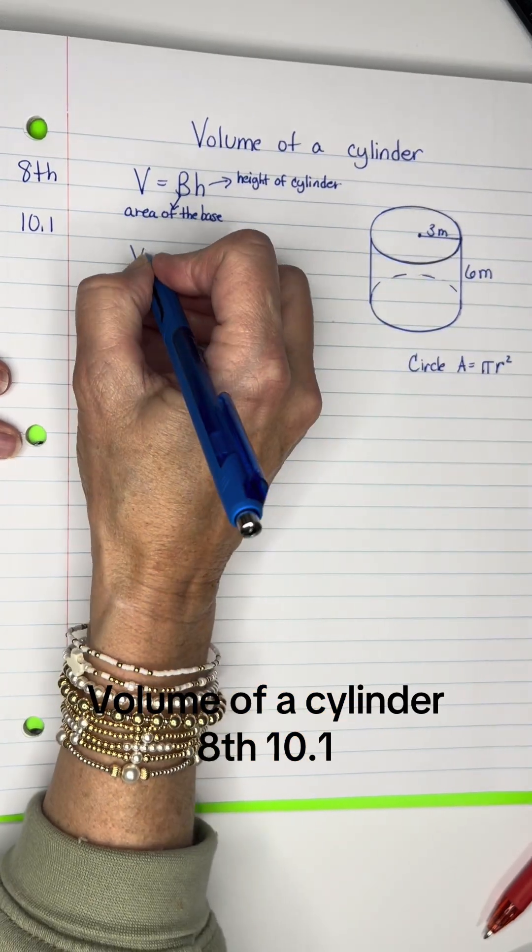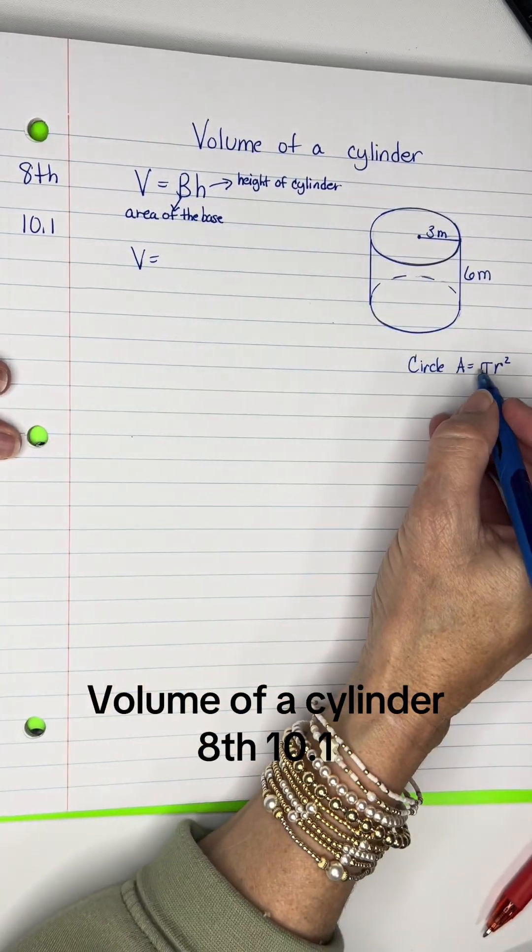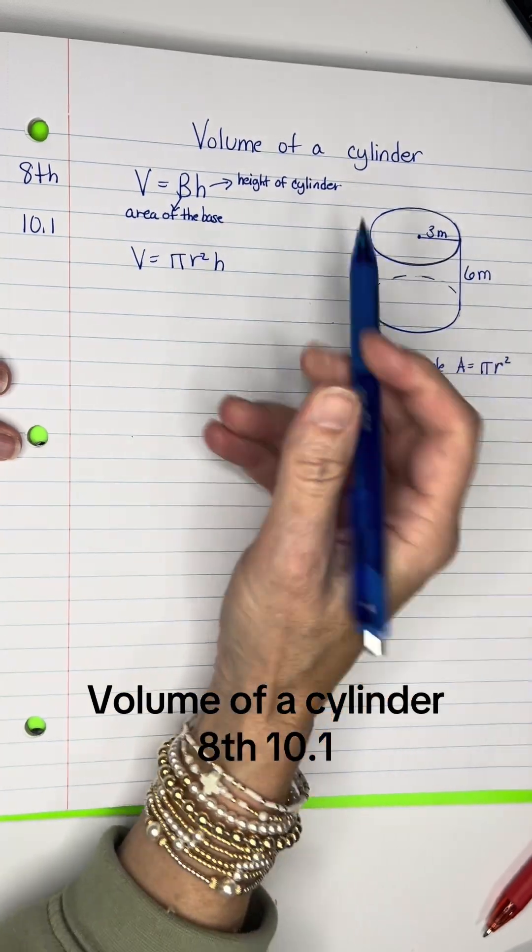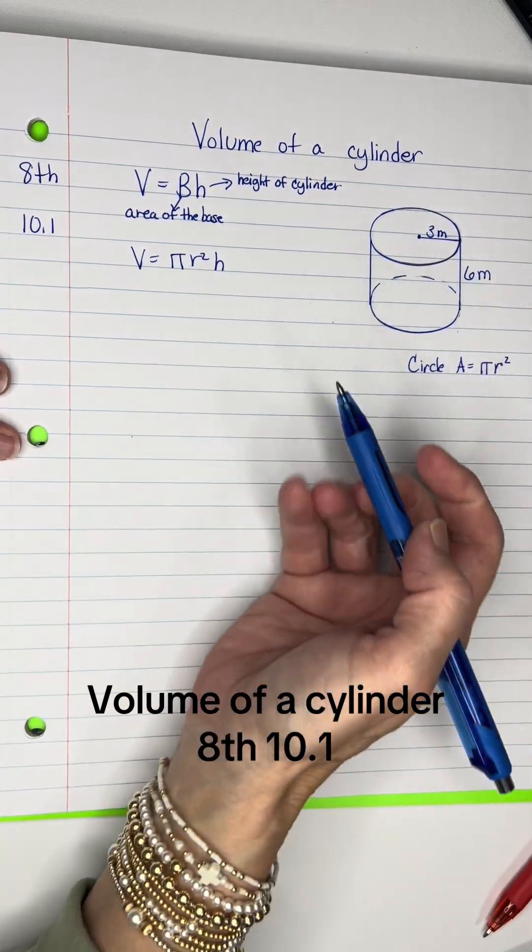So let's work this out. The area of the base is going to be pi r squared because that is a circle. So that's pi r squared times H. This H is the height of the cylinder.